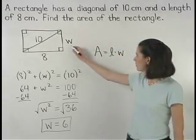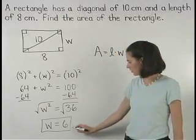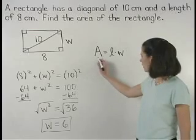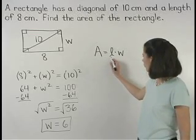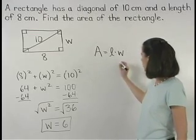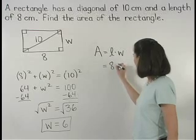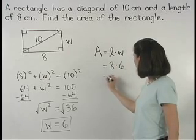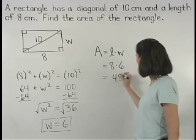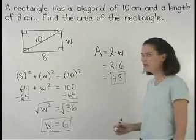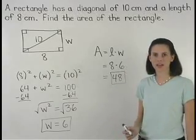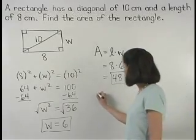Now that we know that the width of the rectangle is 6, we can find the area of the rectangle, which is the length times the width, or 8 times 6, which is 48. So the area of the rectangle is 48 square centimeters.